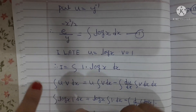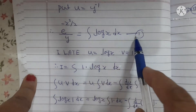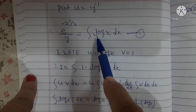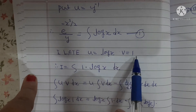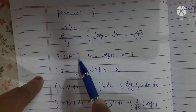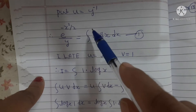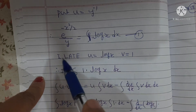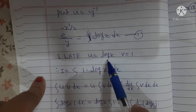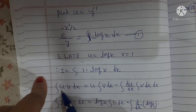Now putting u = y^(-1), we have e^(-x²/2)/y = ∫log(x) dx. To evaluate ∫log(x) dx, we apply the ILATE rule. ILATE stands for: I – Implicit, L – Logarithmic, A – Arithmetic, T – Trigonometric, E – Exponential. Here log(x) is the logarithmic function, so we take u = log(x) and v = 1.